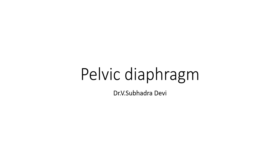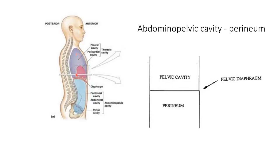The pelvic diaphragm is also known as the pelvic floor. There are various body cavities: the pleural and pericardial cavities in the thorax, and the peritoneal cavity within the abdomen with its extension into the pelvis, forming the abdominal pelvic cavity. The boundary between the thoracic cavity and the abdominal pelvic cavity is the diaphragm. There is another diaphragm between the abdominal cavity and the pelvic cavity, known as the pelvic diaphragm or pelvic floor.